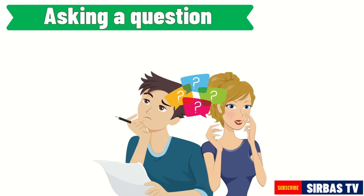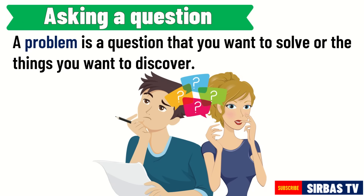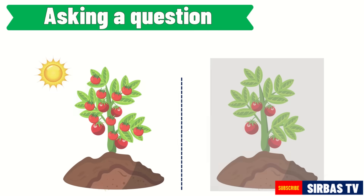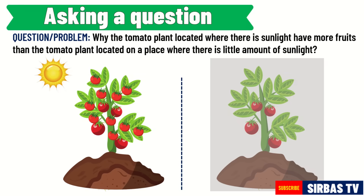After making an observation, the next step is asking a question from your observation. Your question should lead you to the problem. A problem is a question that you want to solve or the things you want to discover. One possible question from our observation is: why does the tomato plant located where there is sunlight have more fruits than the tomato plant located in a place with little sunlight?